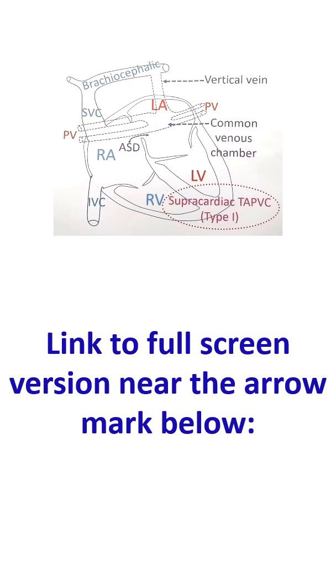Sometimes, it is also known as total anomalous pulmonary venous return. If only one or two of the veins are joining the right side, then it is called partial anomalous pulmonary venous connection, return, or drainage.